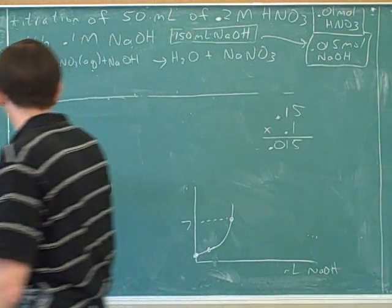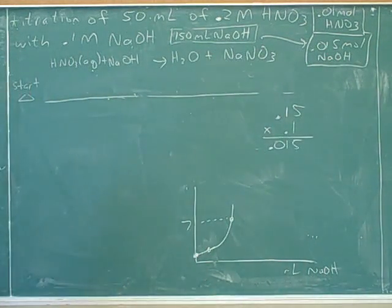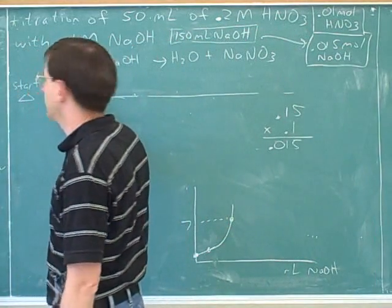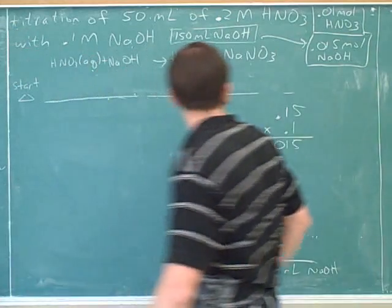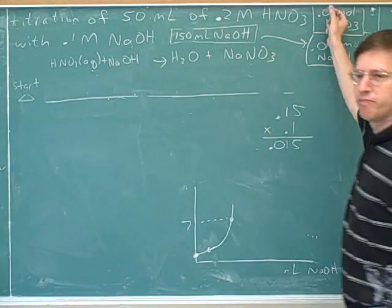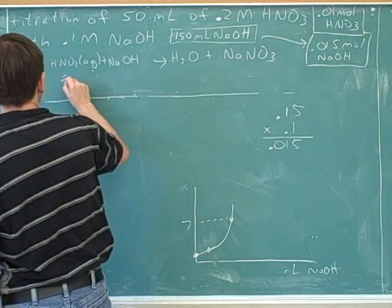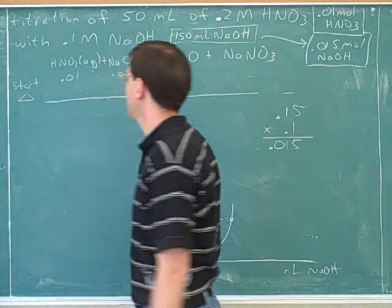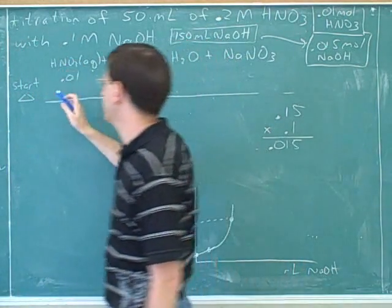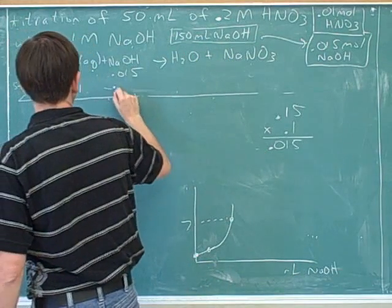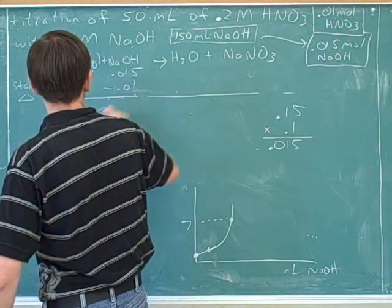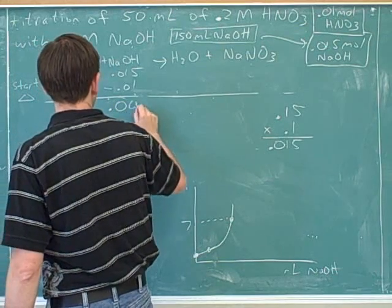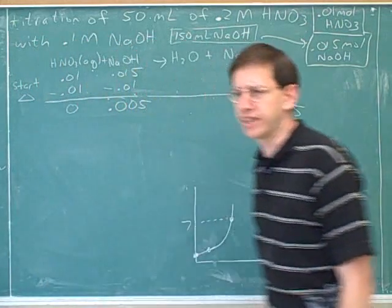Looking at the table: all these problems have 0.01 moles of acid — that's not changing. You've figured out that we have 0.015 moles of sodium hydroxide, and now the limiting reagent is the nitric acid. But the reaction still goes to completion.